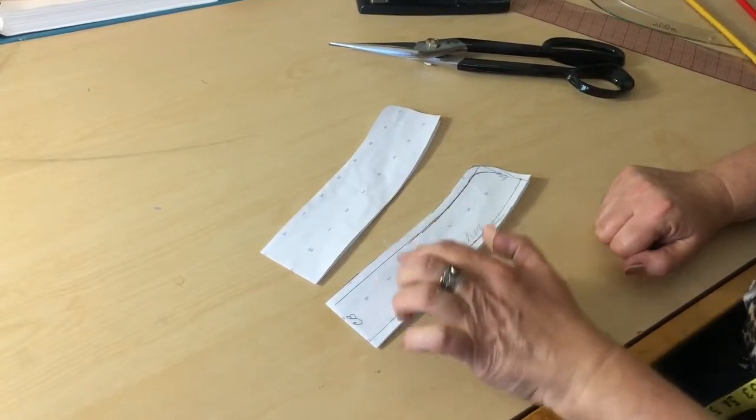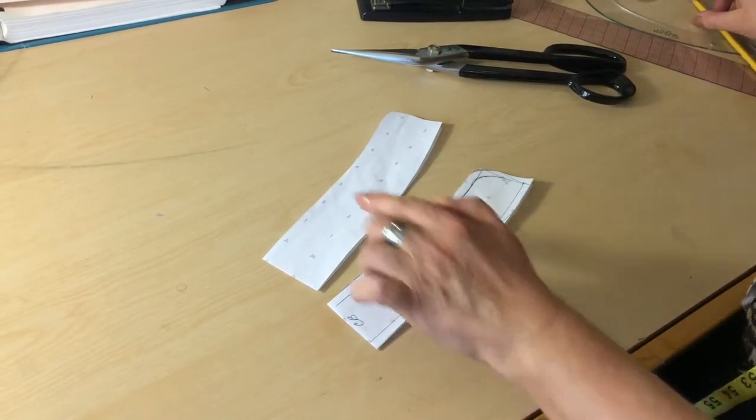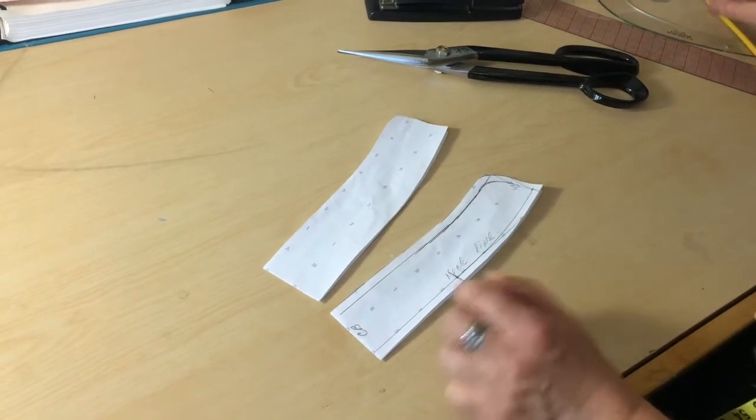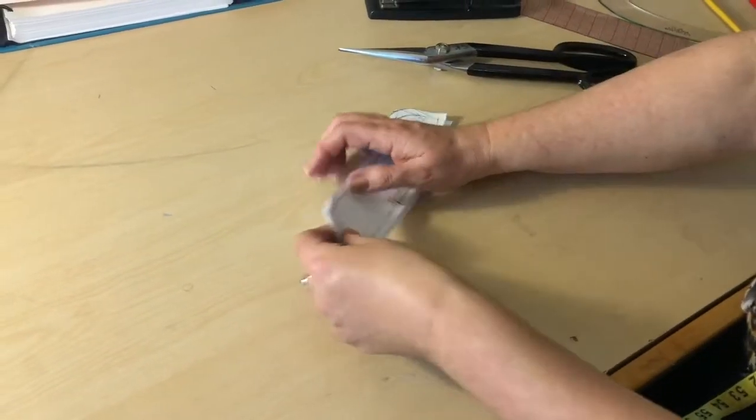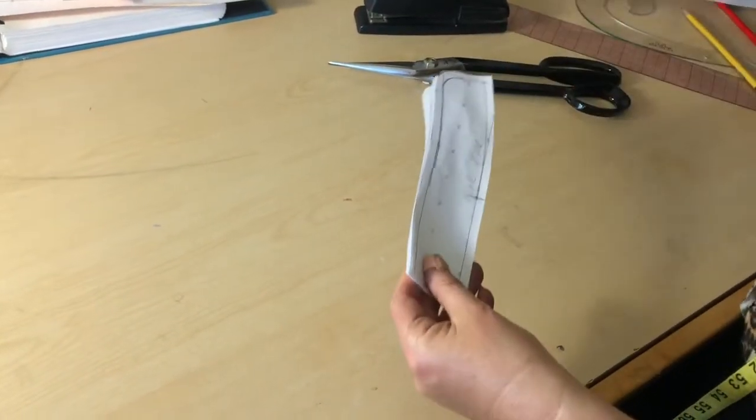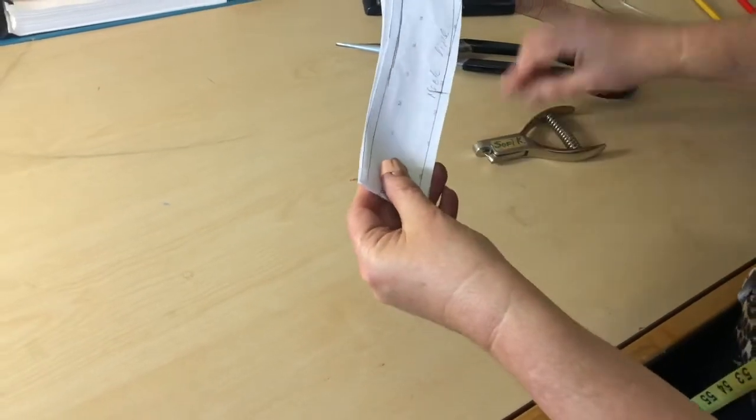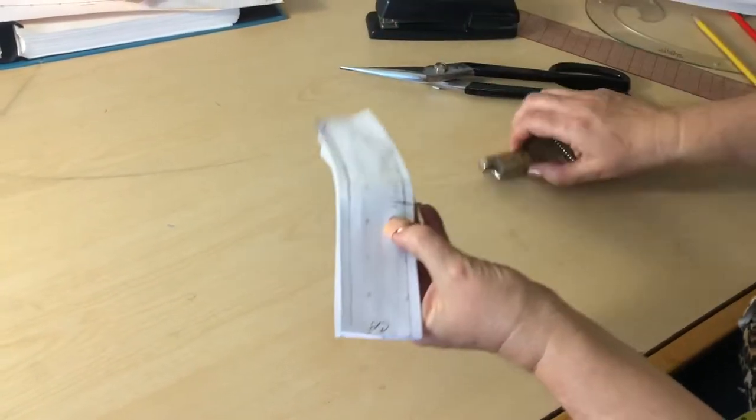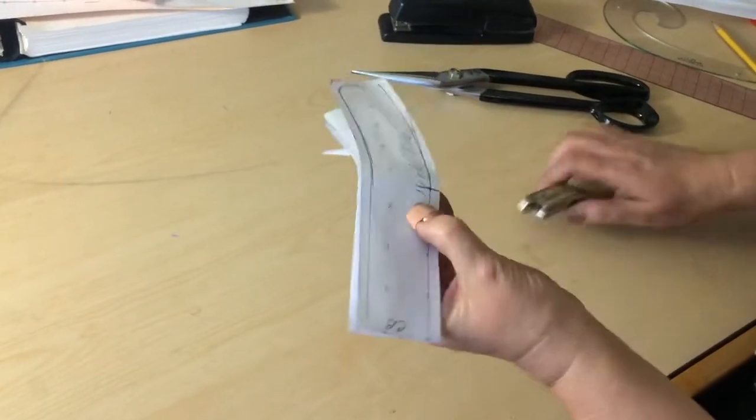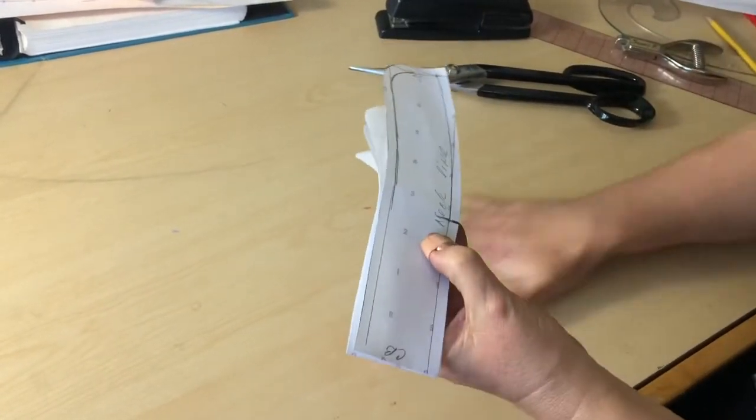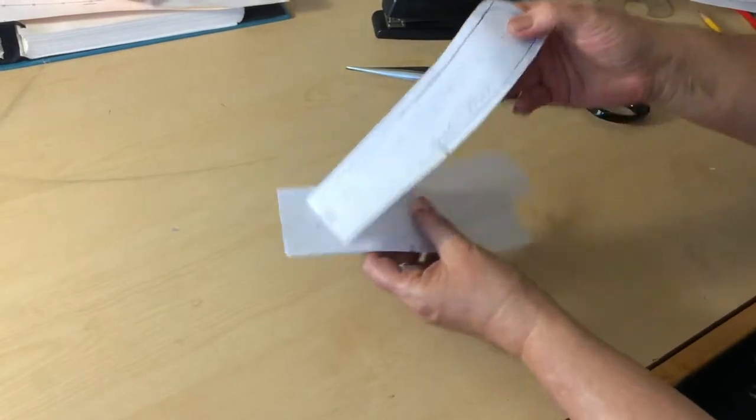You will see one of them is going to be my top collar. This is my top collar and this is my under collar. Now before I actually separate them from each other, I would like to mark my neckline notch which will be a common notch between these two pieces and then let's open them.